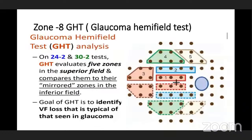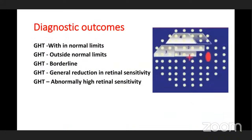Zone eight is the glaucoma hemifield test (GHT), available only in 24-2 and 30-2. It evaluates five zones by comparing superior and inferior mirror image sets to find the difference. Diagnostic outcomes include: within normal limits, outside normal limits, borderline, general reduction in retinal sensitivity, and abnormally high retinal sensitivity.